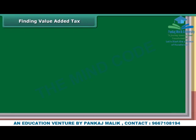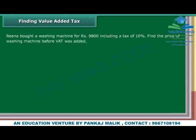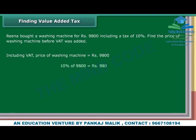Finding value added tax. Rina bought a washing machine for Rs. 9,800 including a tax of 10%. Find the price of the washing machine before VAT was added. Including VAT, price of washing machine equals Rs. 9,800. 10% of 9,800 equals Rs. 980. Price before VAT equals Rs. 9,800 minus Rs. 980, which equals Rs. 8,820.